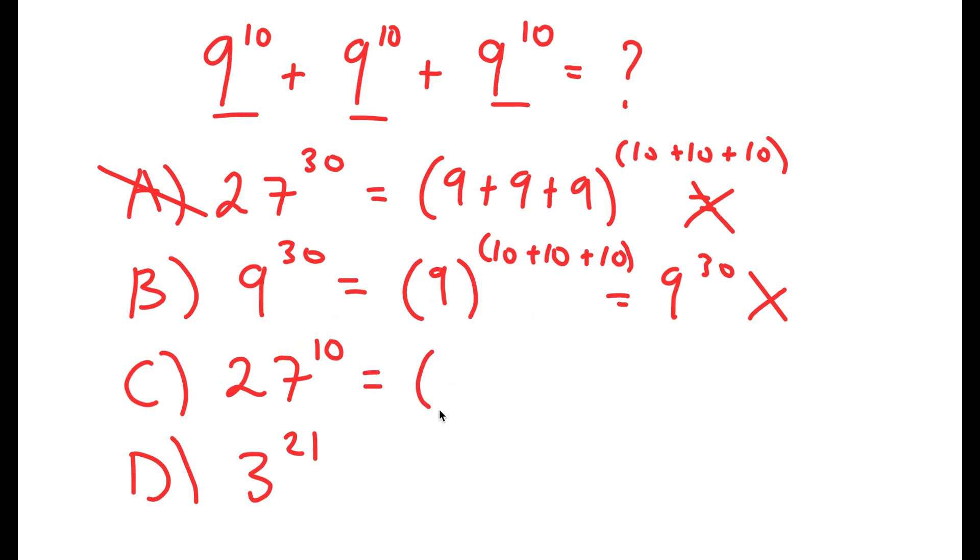Now, 27 to the power of 10, how someone got this was likely by adding all the bases and keeping the exponent the same. And this is again wrong. This is not how you're supposed to properly add exponents.